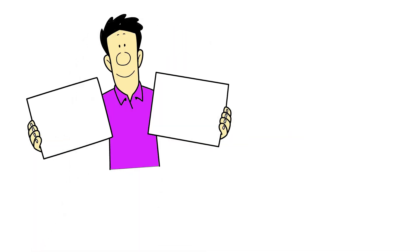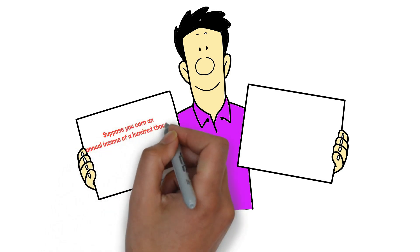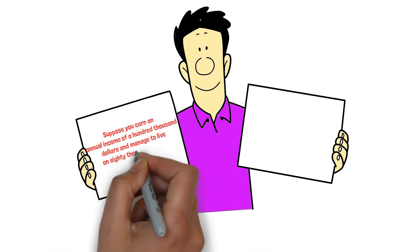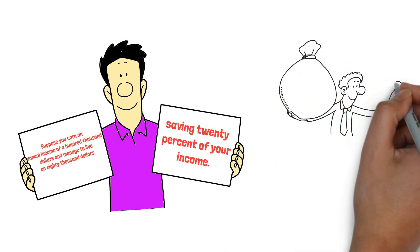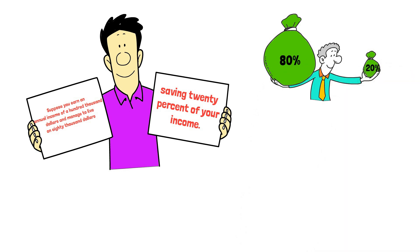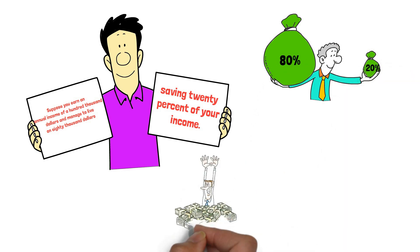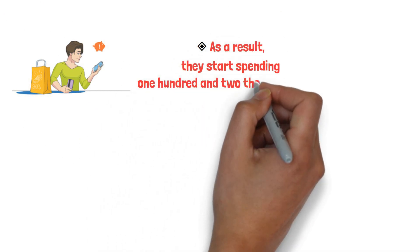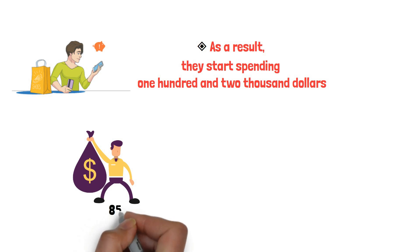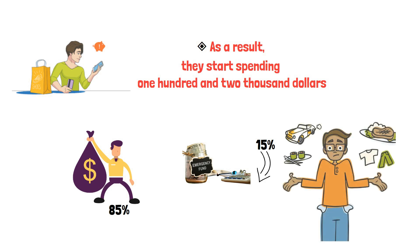To illustrate this, let's consider an example. Suppose you earn an annual income of $100,000 and manage to live on $80,000, saving 20% of your income. This implies that you are living on 80% of your income and saving 20%. However, if you receive a raise to $150,000 a year, it's common for people to increase their spending to match that new income. As a result, they start spending $102,000, corresponding to 85% of their income, causing their savings rate to drop to 15%. This phenomenon is known as lifestyle creep.